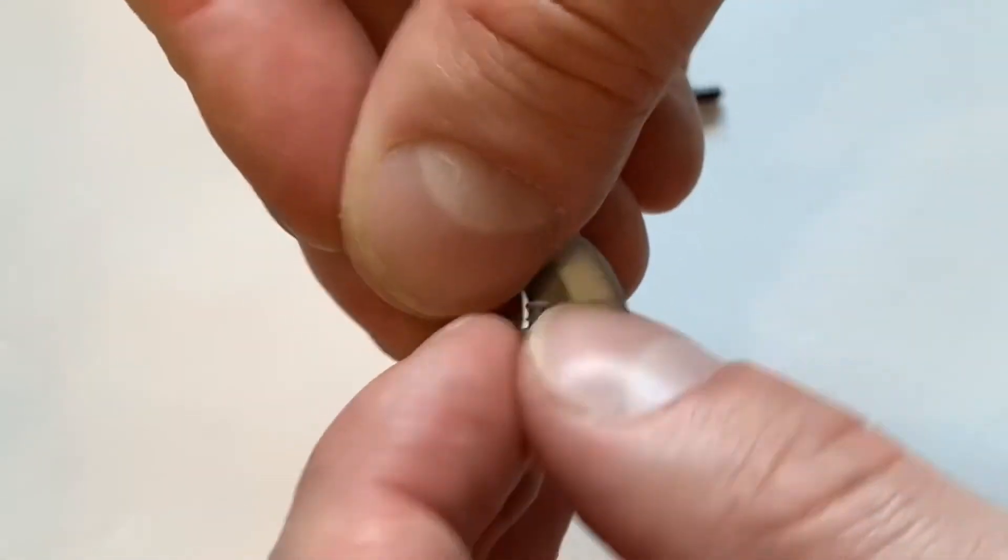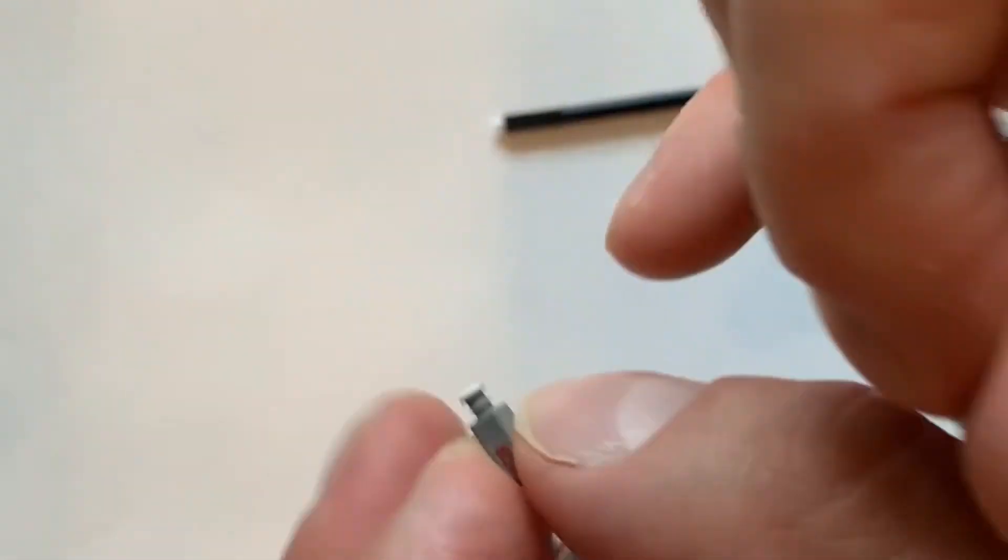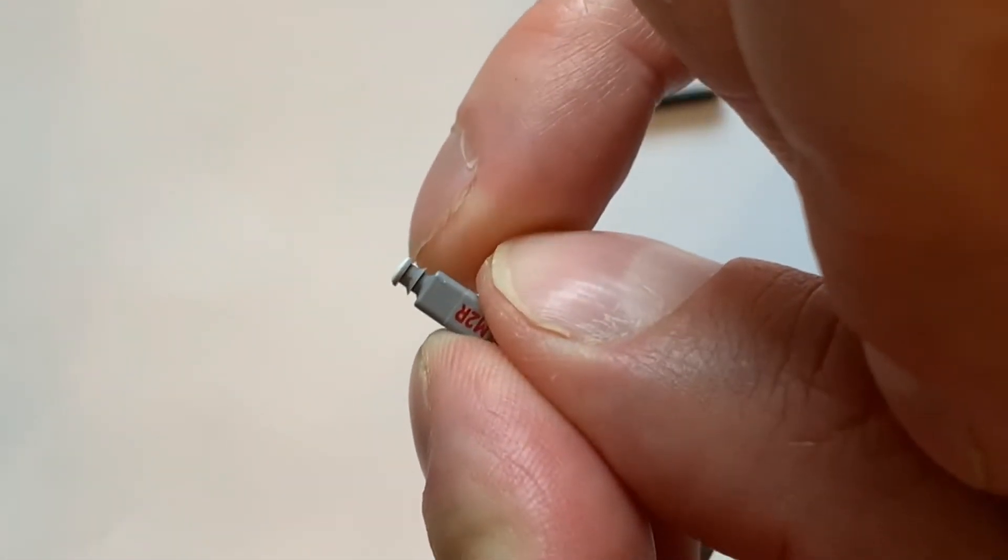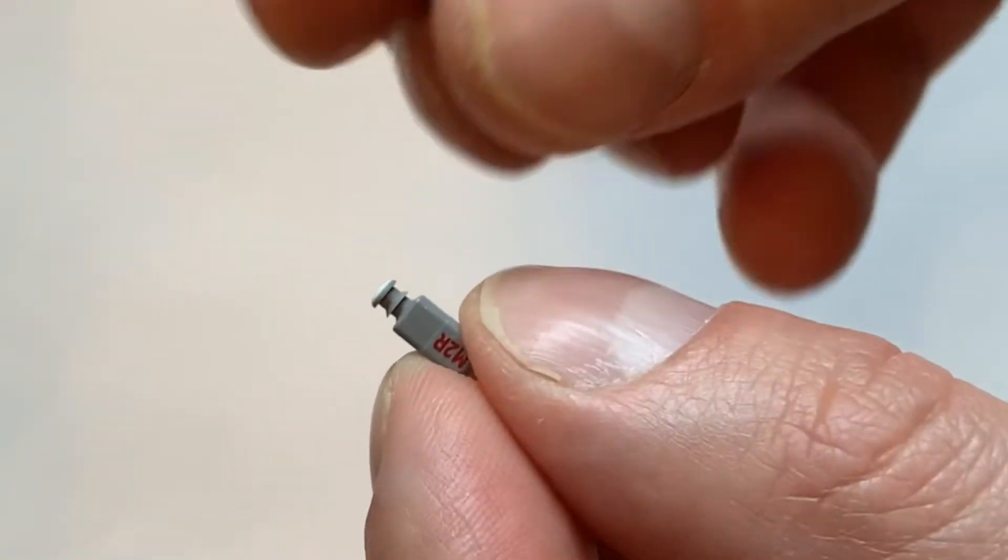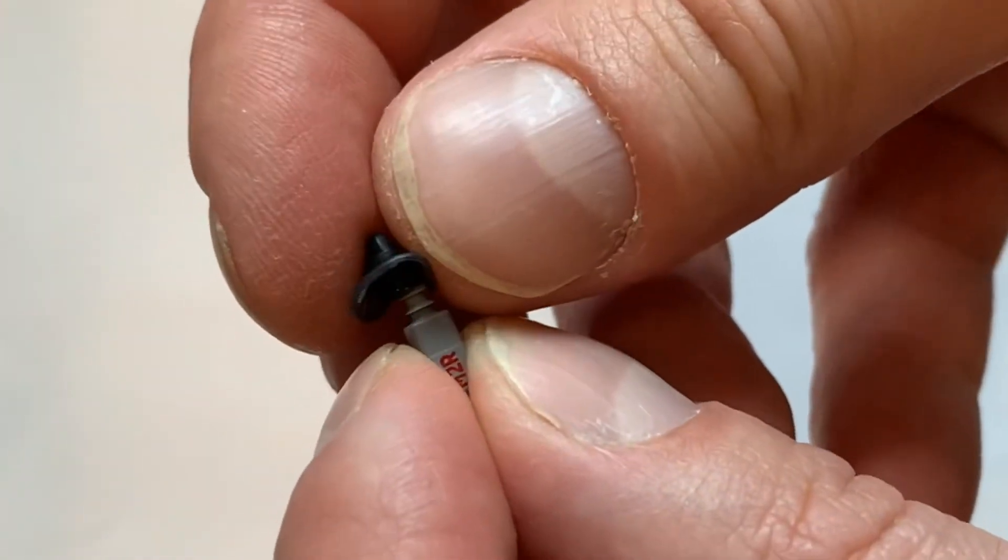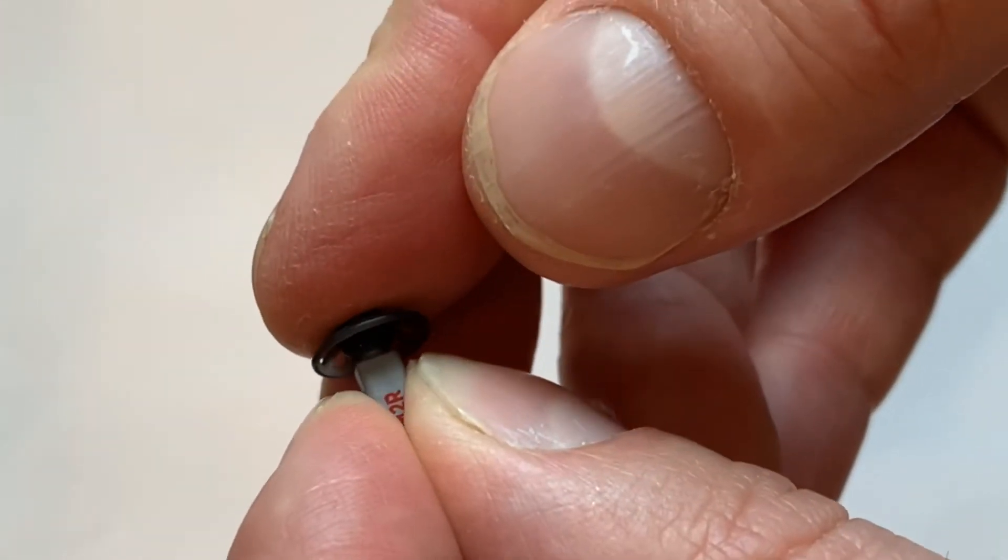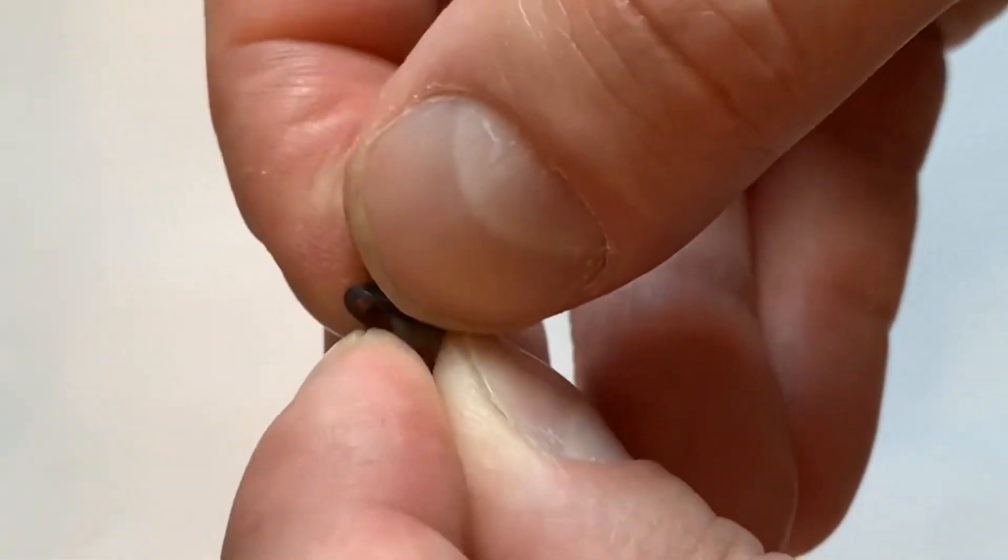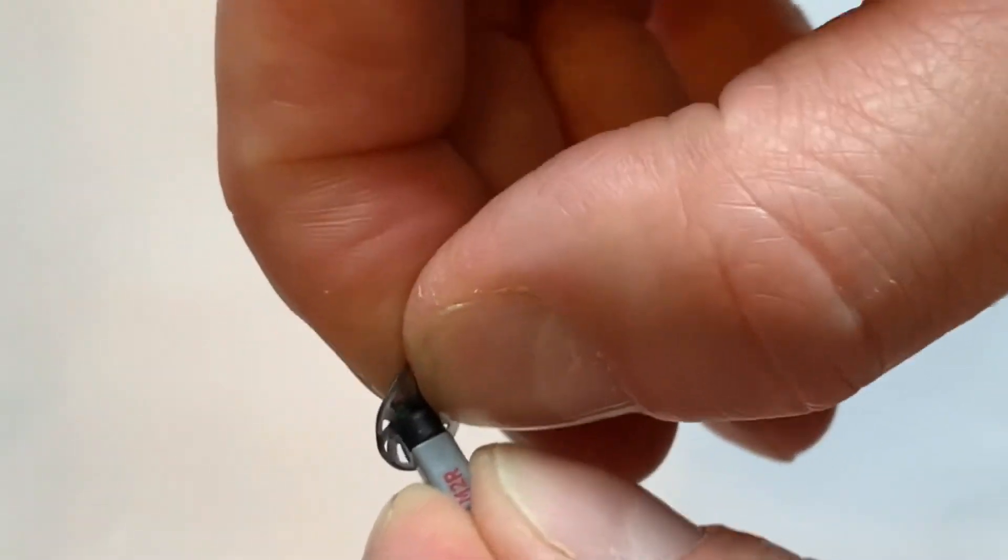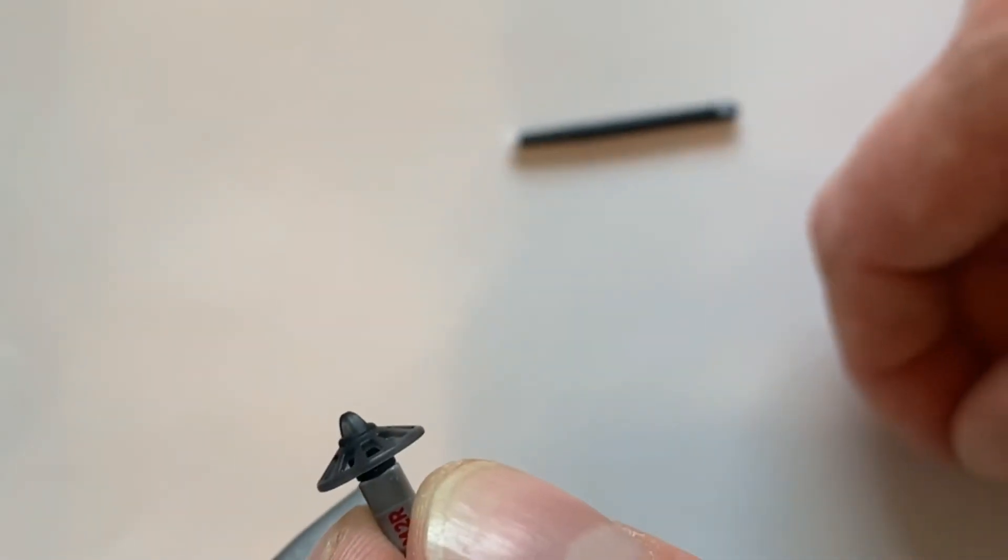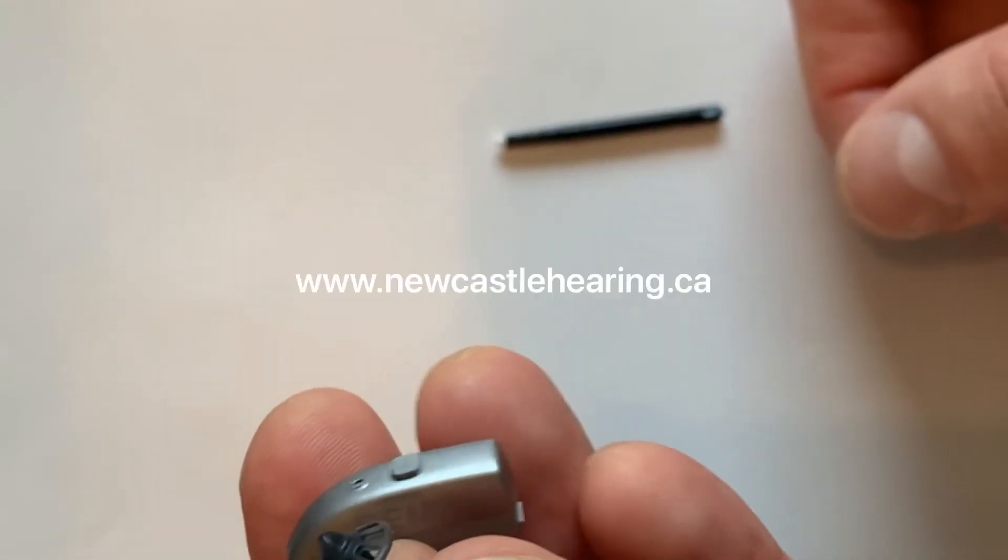And when you're putting it back onto the end, I want you to watch. Look carefully. There are two ribs sitting there. It's important when you replace the dome that you slide it over top of both of those ribs so that it's held on nice and secure. Give a little bit of a tug to make sure that it's in place. And now you should be good to go.